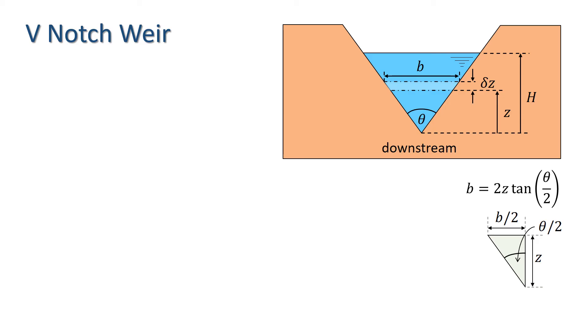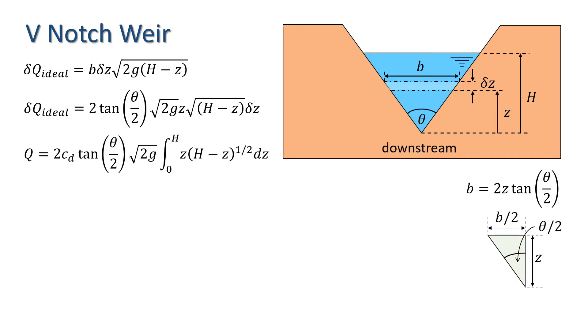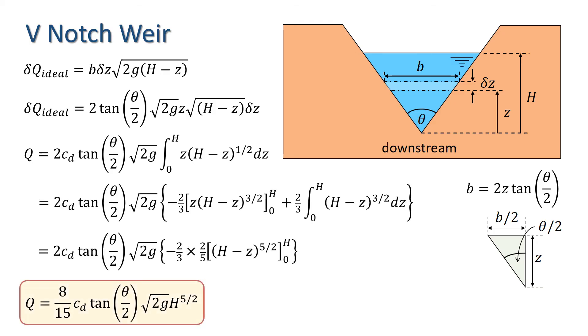Now, assuming that the upstream velocity is small, we can write delta Q ideal equals B delta Z times root 2 G H minus Z, as for the sharp crested weir. And we know that B equals 2Z tan theta over 2, giving us an expression for delta Q ideal. Now we integrate. And this time, I've multiplied by CD before doing the integration to take account of the energy. Working that through, we get Q equals 8/15 times CD times tan theta over 2 times root 2 G times H to the power of 5 over 2.